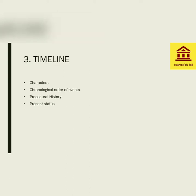The next step is Timeline. All moot problems have a series of events and a bunch of characters involved. Make a flow chart to help you understand the relationship between each party and make a list of events in chronological order. They may give the events in a backdated manner or sometimes even jumble them to confuse you. It is very important to refer to the dates of events and arrange them in chronological order.